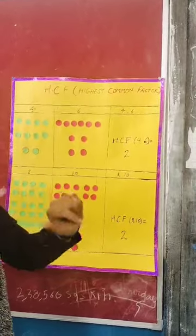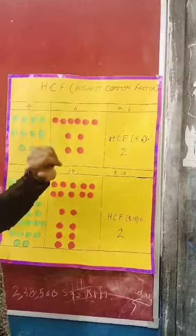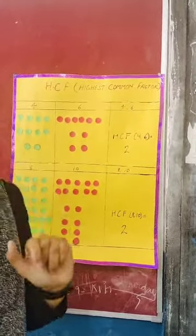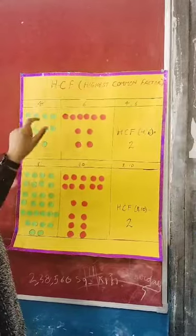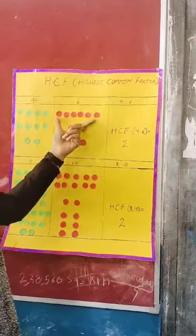To represent number 6, here we take 6 circles. Students, what we can see through that number 4 is less than number 6.